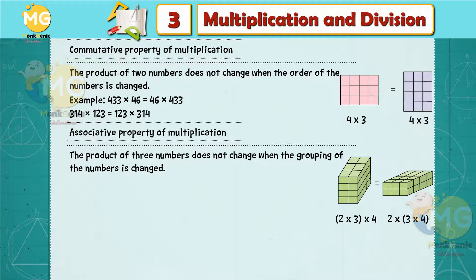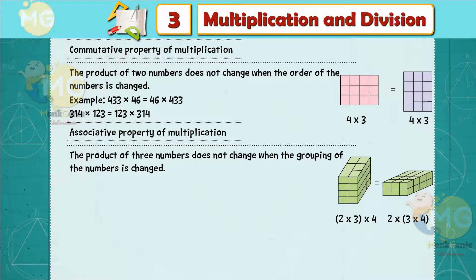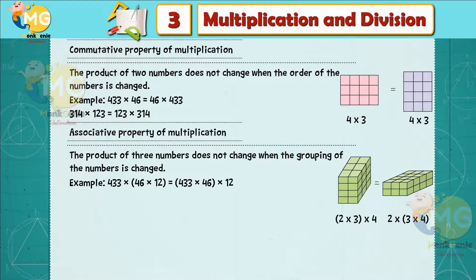Associative property of multiplication: the product of three numbers does not change when the grouping of the numbers is changed. For example, (2 × 3) × 4 = 2 × (3 × 4). Example: 433 × 46 × 12.